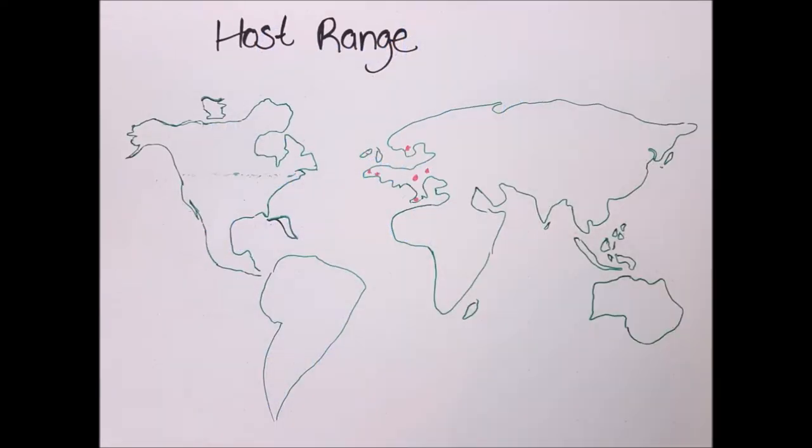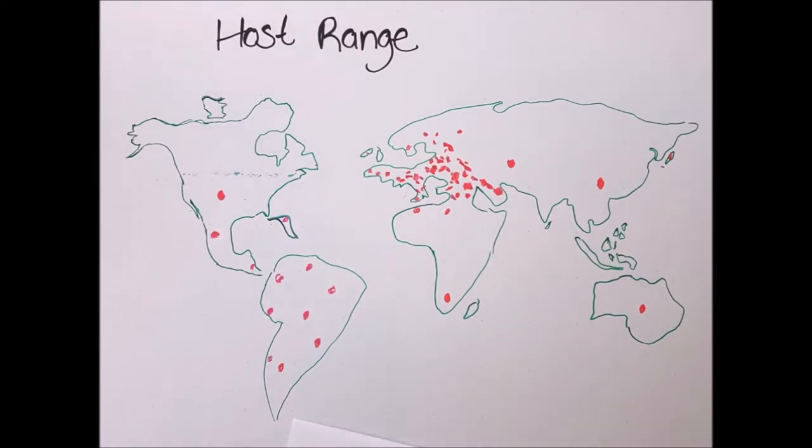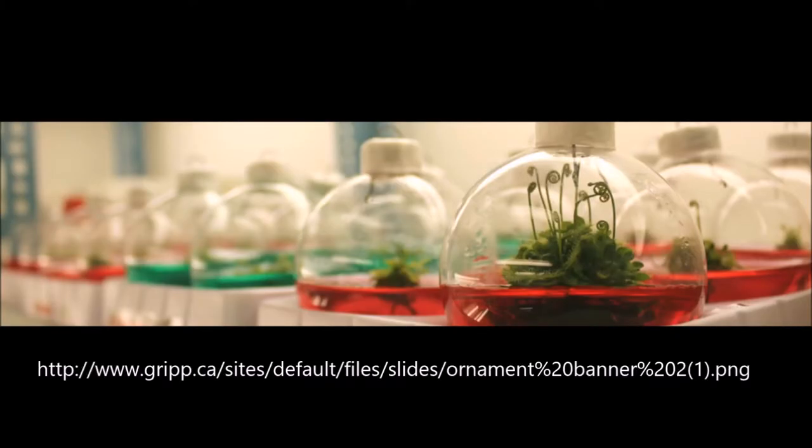D. dipsaci started being studied in the 1850s in Europe. This is where there is the most significant damage done to crops. It is listed as a quarantine pest by the EPPO. The EPPO is a governmental organization that is responsible for the protection of plants within the European region and the Mediterranean region.